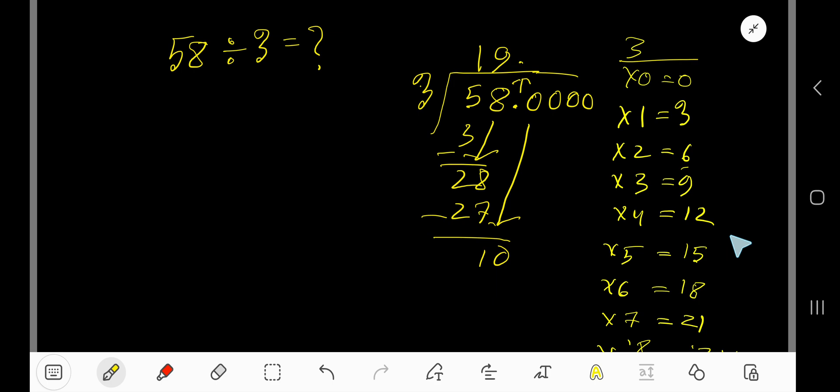3 goes into 10 how many times? 4 times 12 which is greater, so 3 times. 3 times 3 is 9. Subtract to get 1.